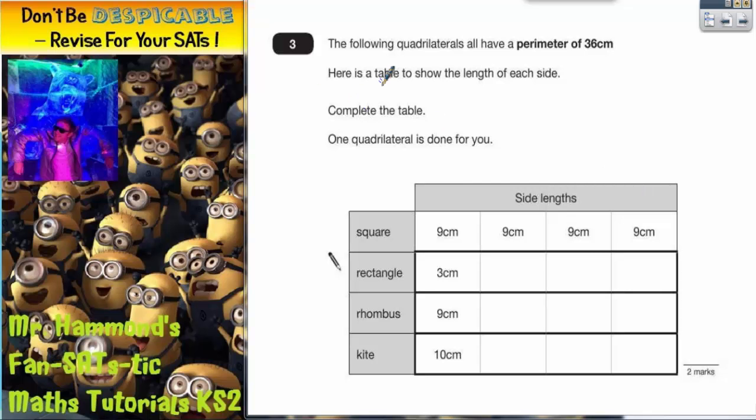Question 3 is all about quadrilaterals. It says the following quadrilaterals all have a perimeter of 36. Remember, the perimeter is the distance around the outside of the shape.